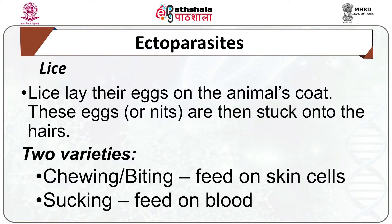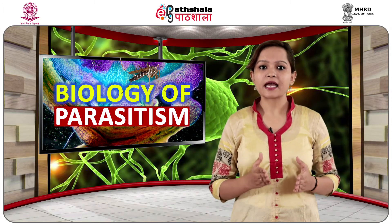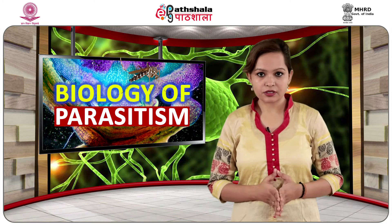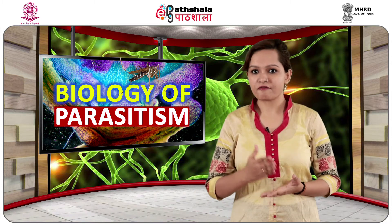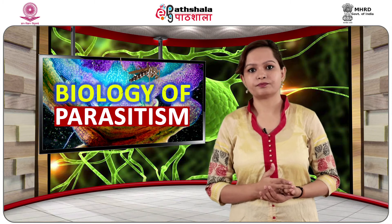Lice can be divided into two types on the basis of mouth parts and feeding habits. Number one: chewing lice, also called Mallophaga. Number two: sucking lice, also called Anoplura. Chewing lice are ectoparasites on birds and mammals, mostly feeding on feathers, hair, or skin of the host.